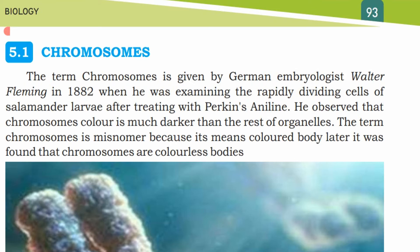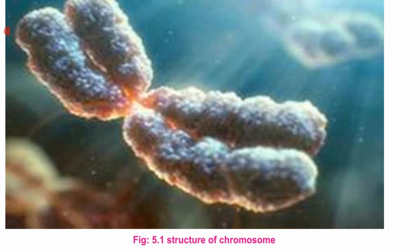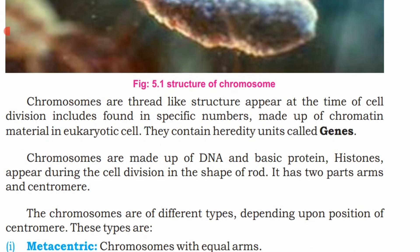Chromosome is a misnomer because it means 'colored body' but the chromosome is colorless. Here you can see chromosomes are thread-like structures that appear at the time of cell division, found in specific numbers, made up of chromatin material in eukaryotic cells. They contain hereditary units called genes.